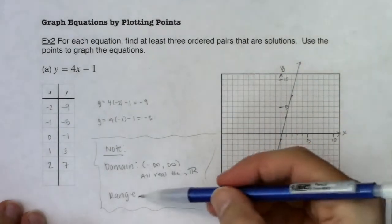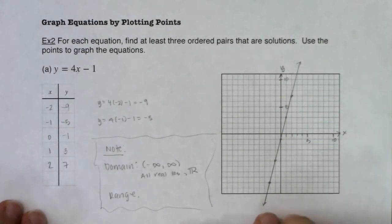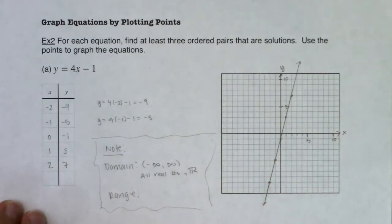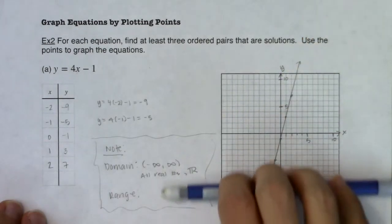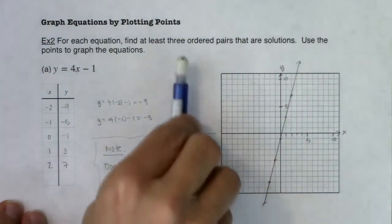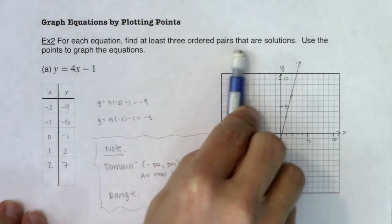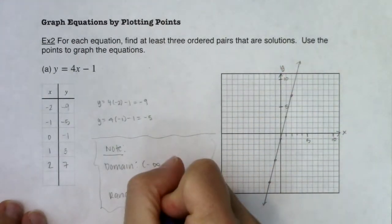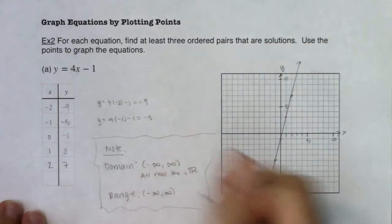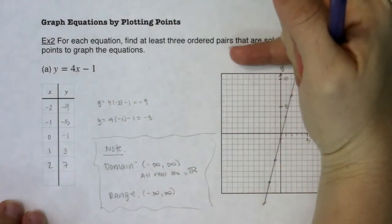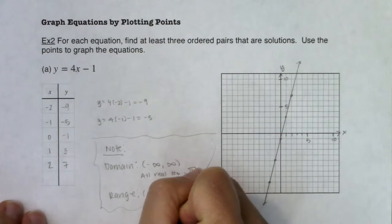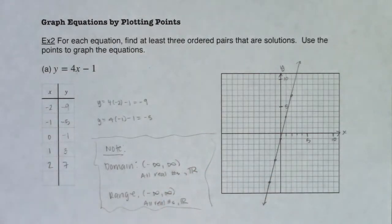Range is all the y values. You can see the graph goes all the way down and all the way up — the y values go from all the way down to all the way up. So the range is also negative infinity to positive infinity, or all real numbers. We always write from lowest to highest. We'll pick this up officially at a later section — I just want to give you a preview. Now let's flip to the next page and graph a different function.